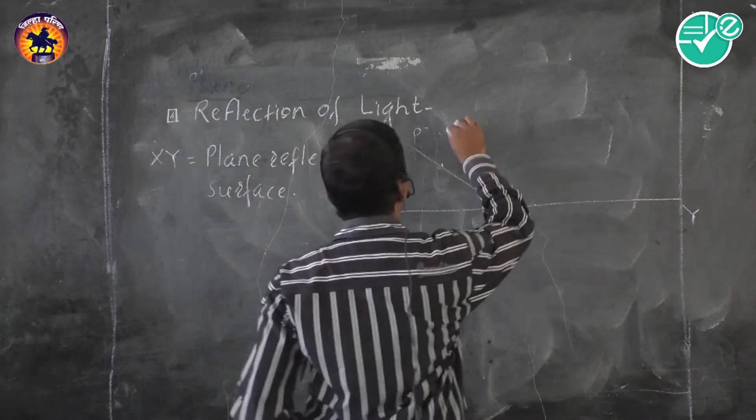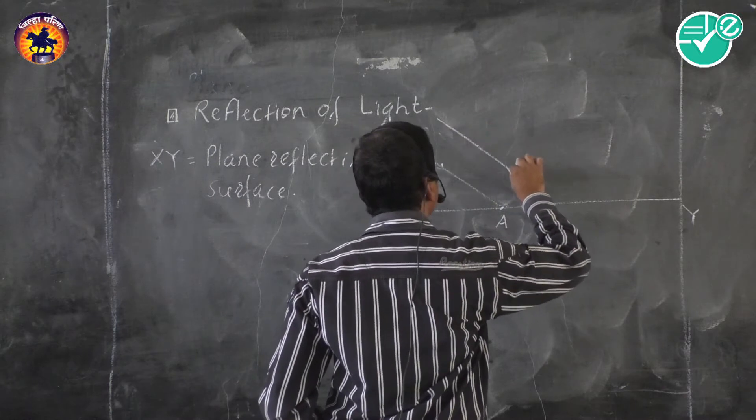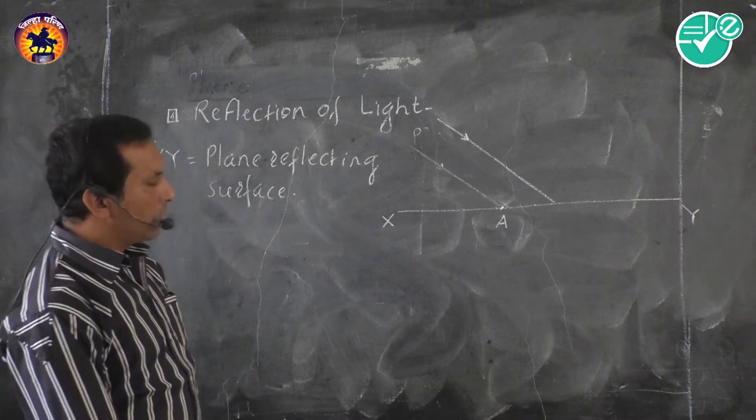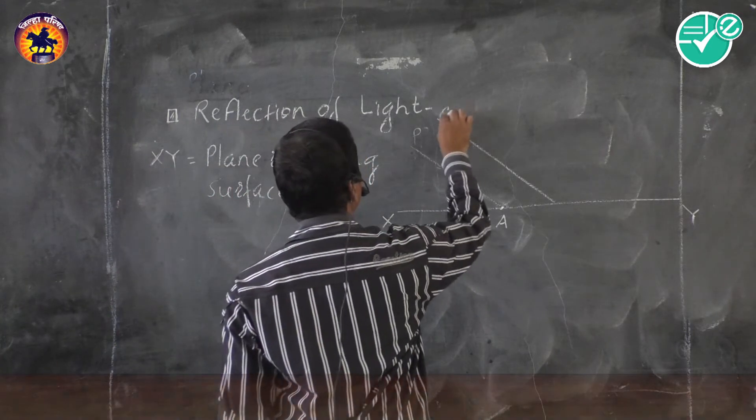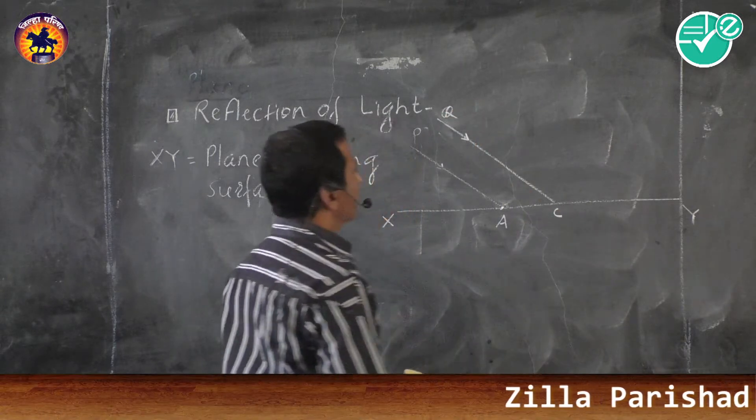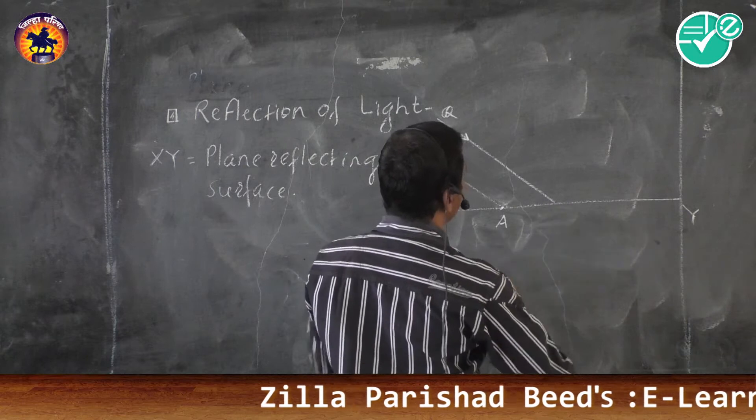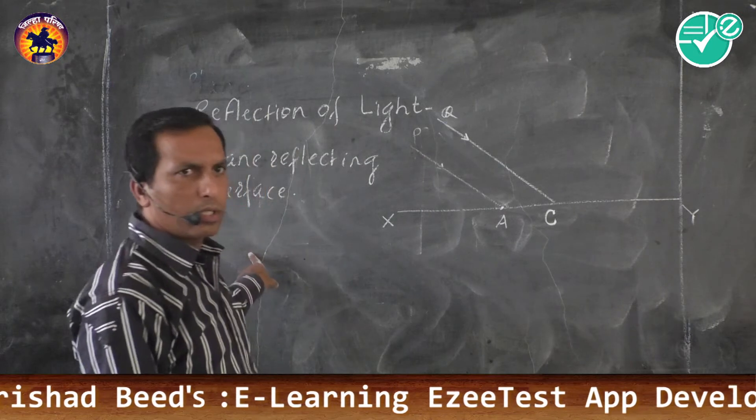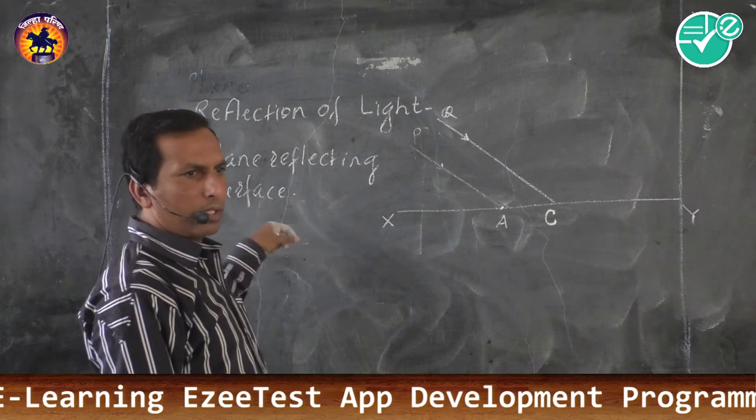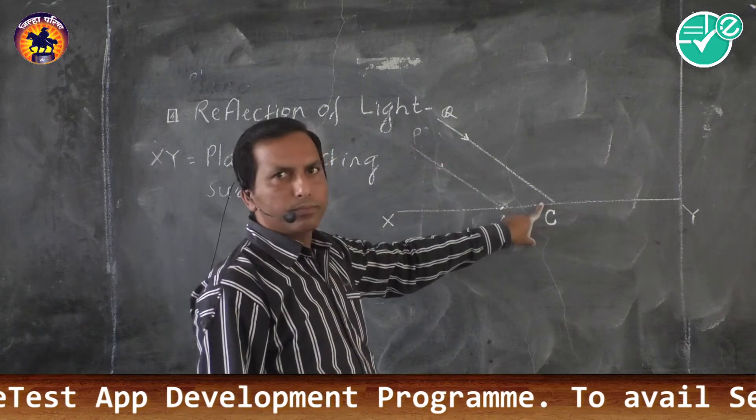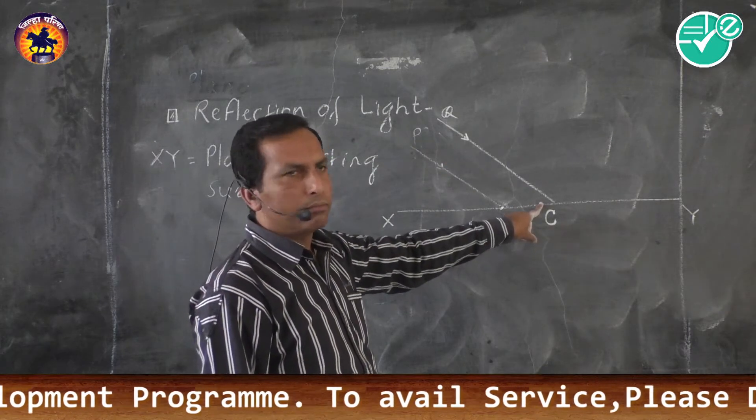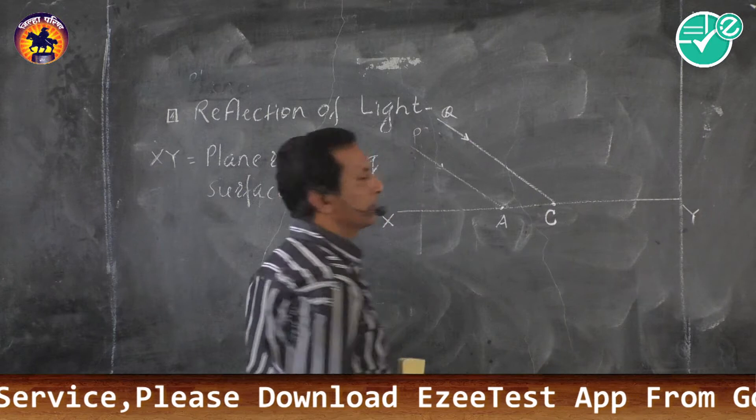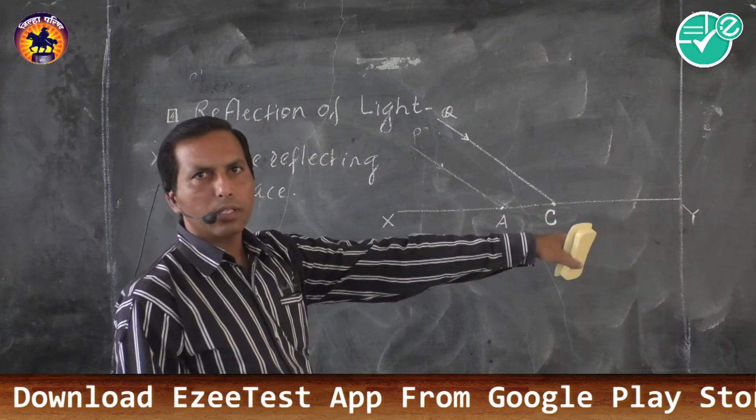Similarly, I can take another ray which is QC, capital C because we are using C as a notation for velocity of light. It is a small letter. QC is an incident ray, incident at point C on plane reflecting surface XY.